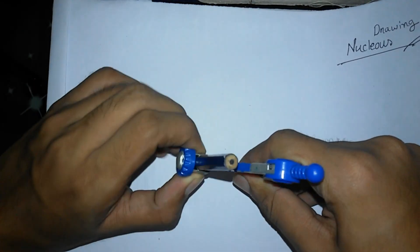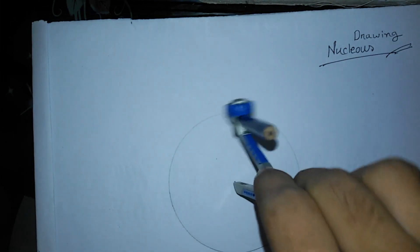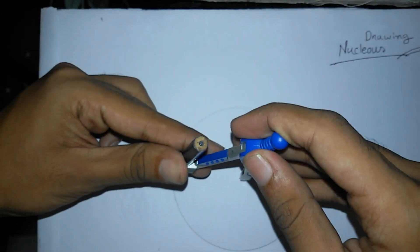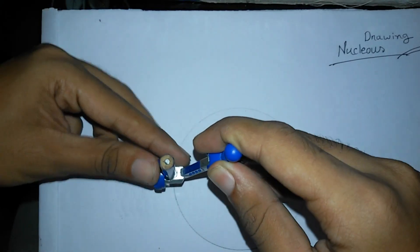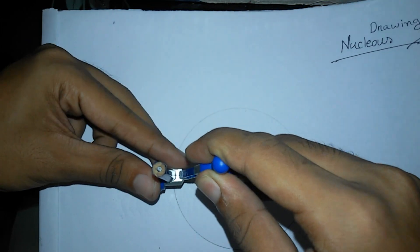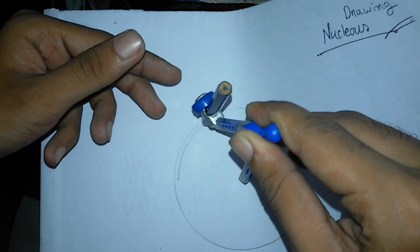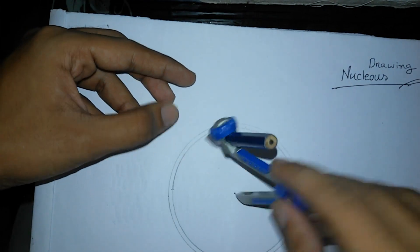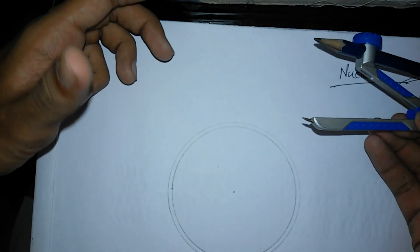Now I'm drawing a circle where I want my nucleus. This is the first circle. Then I have to make another circle like this in a very short range. You need to draw two circles like this.